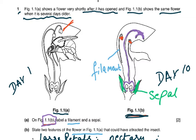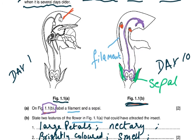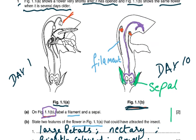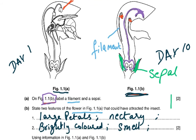In this example there's something very important to pick up. It says: state two features of the flower in figure 1.1a that could have attracted the insect. In 1.1a you can see very large petals and a nectary producing nectar. They're also brightly colored. But be careful — if the question says only features shown in the diagram, you can't write nectary or smell if they're not shown. How you read the question is a very important exercise.